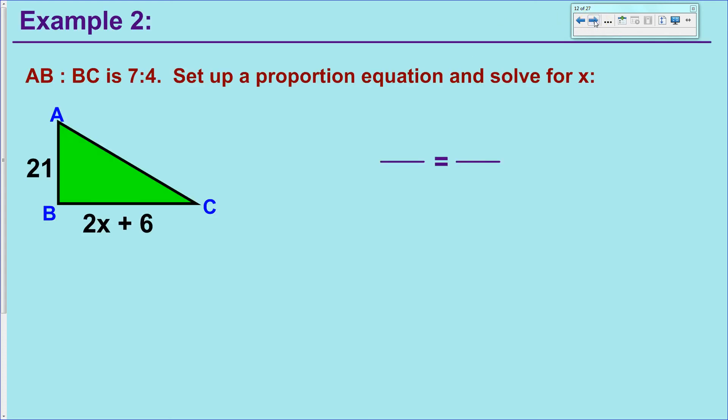Moving on to our second example about proportions. Here's a triangle. They tell you that the distance from A to B is proportional to B to C in a ratio of 7 to 4. They want you to set up a proportion equation and solve for x. Again, I'd like you to pause the video and see if you can set that thing up. If you do that correctly, we want to take the ratio that was given to us, 7 over 4. And since they gave it to us in AB to BC, we might as well keep that trend going. So, I'm going to put the stuff I know about AB on the numerator and the stuff I know about BC on the denominator.